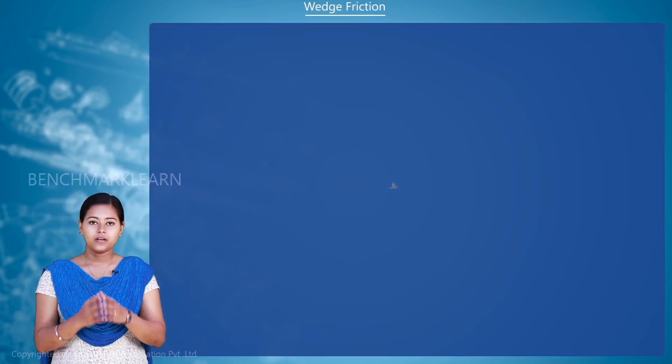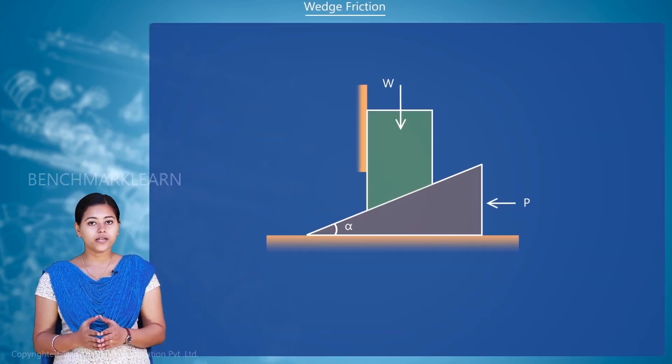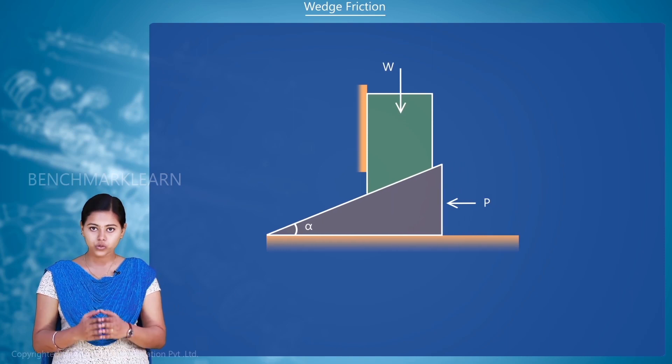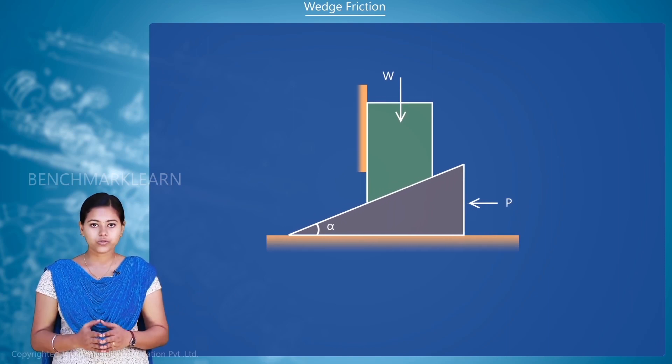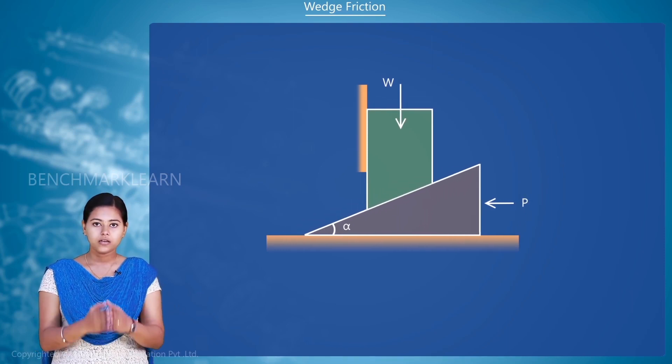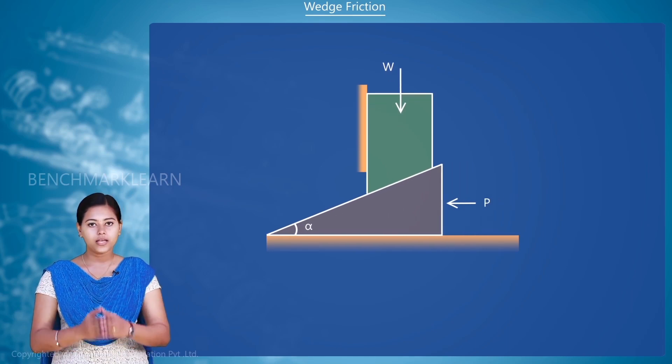Wedge friction. A wedge is a trapezoidal or triangular shaped tool which is generally used to lift heavy weights for adjusting position of a body.